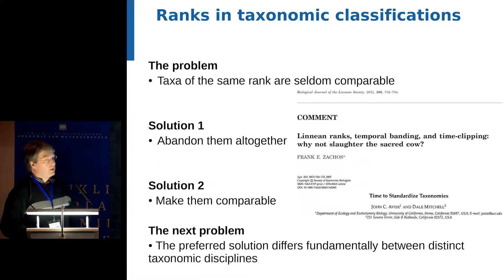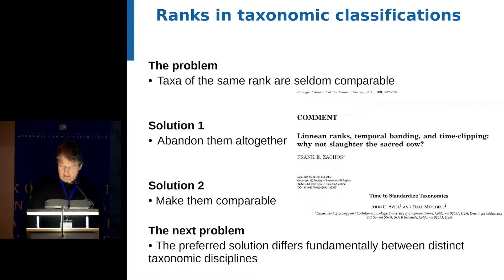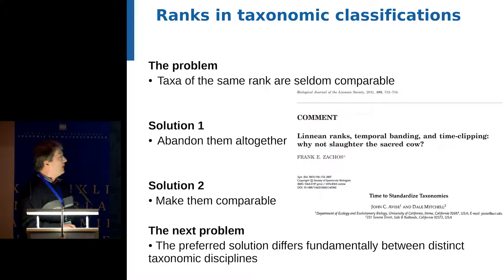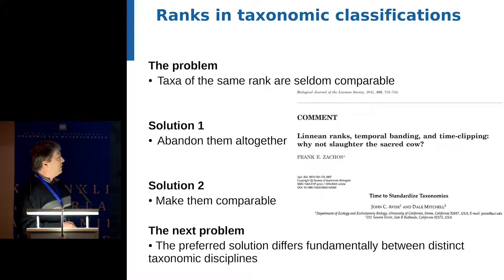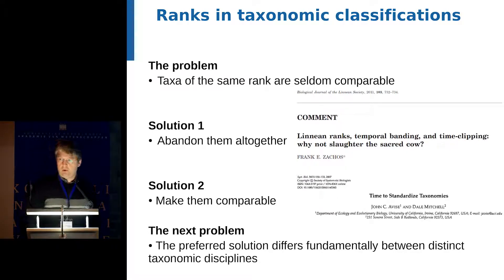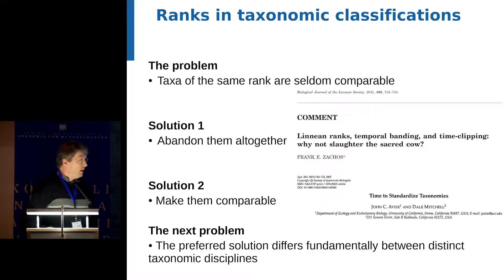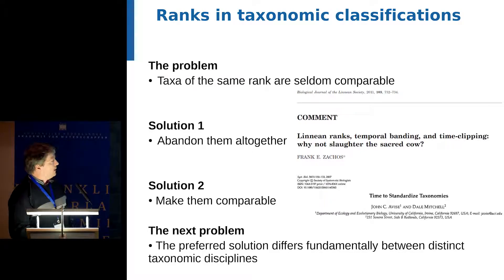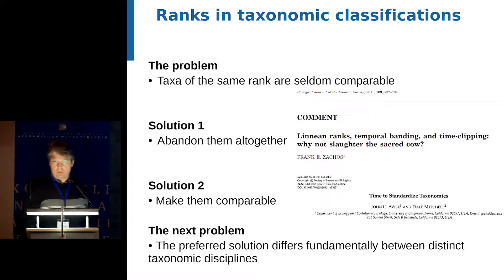The problem is apparently that taxa of the same rank are seldom comparable, and there are two solutions to this perceived problem. One of them is to abandon ranks altogether, which is, for instance, what the PhyloCode is doing. The other solution, which is also obvious but maybe more difficult, is to make them comparable.